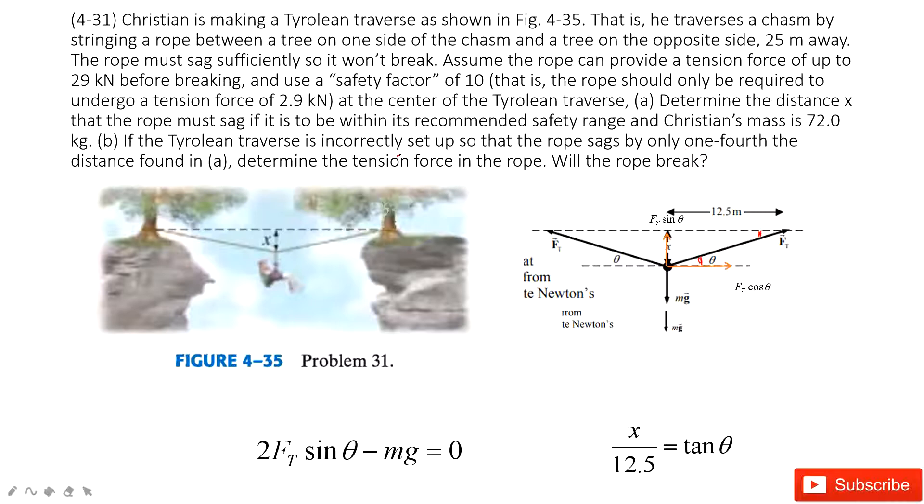Part b asks you if this is incorrectly set up. This range is just one fourth and asks you to determine the tension force. Will this rope break? It gives you the maximum force this rope can break.